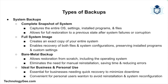A system backup is a complete snapshot of your computer's operating system, settings, installed programs, and files. This type of backup is useful if you want to restore your entire system to a previous state after a major failure or corruption. System backups offer a full system image — an exact copy of your entire system — allowing you to recover not just files but also installed programs and system configurations. A bare metal backup allows you to restore your entire system from scratch, including the operating system, without needing to reinstall anything manually. System backups are especially useful in business environments or for users who want to avoid reinstalling software.